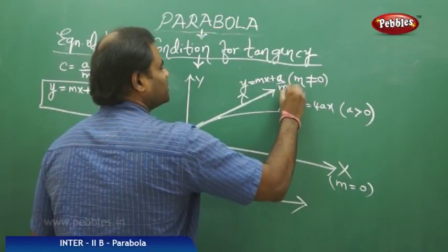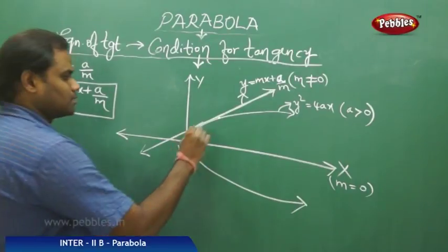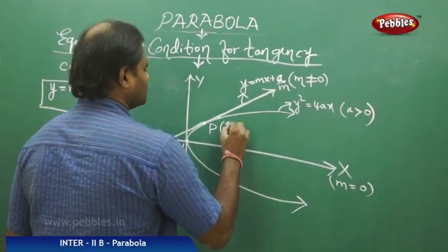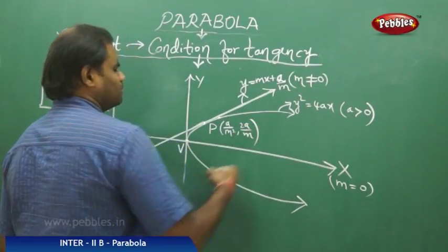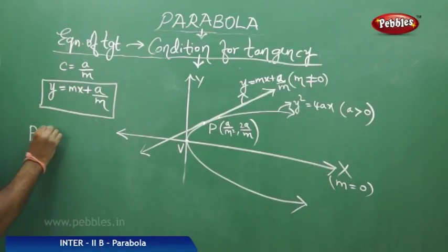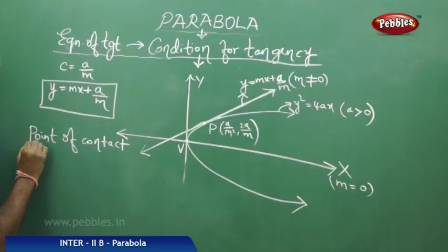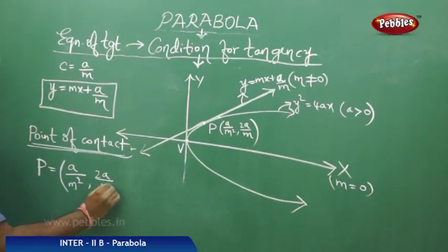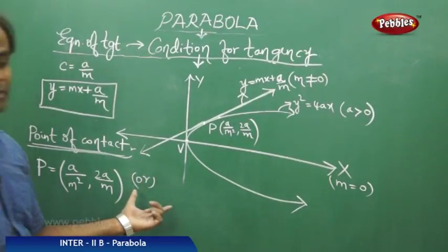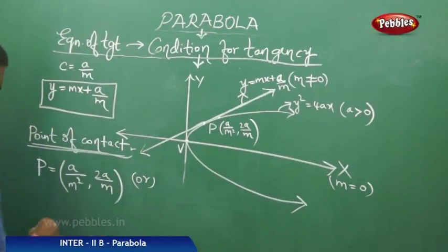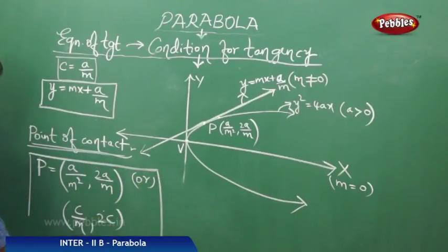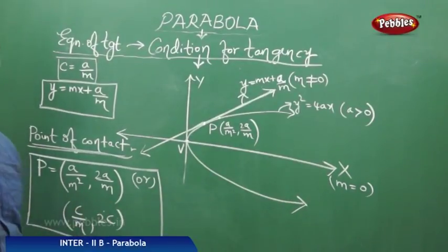So this is the condition for tangency reduced to the equation of tangent: y equals mx plus a by m. The point of contact is given by P, that is (a/m², 2a/m), which is how we define the point of contact. Or this is also given in terms of c as (c/m, 2c). If the value of c is given, we reduce using the condition c equals a by m to understand the point of contact.